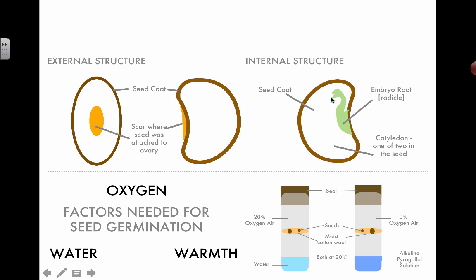Ideally the seed lands with optimum conditions of oxygen, access to water, and good temperatures for activating enzymes. It needs to put out its first roots and stems without any photosynthesis because it doesn't have leaves yet. Inside the seed, depending on the type of plant, if you're a monocot you have one cotyledon — like the first leaf that would grow out. If you're a dicot, you have two cotyledons. The embryo root turns into the root, and another part turns into the shoot.